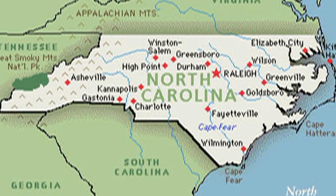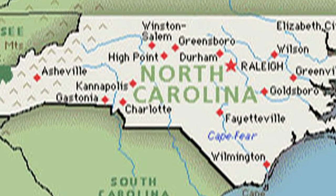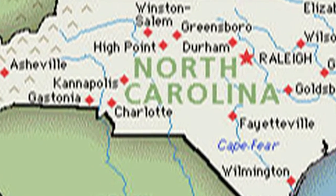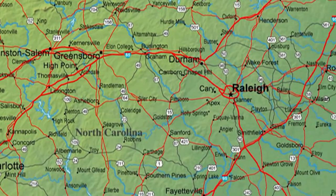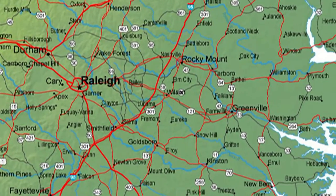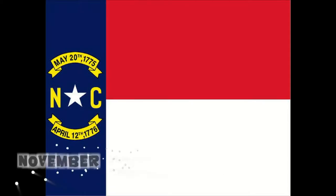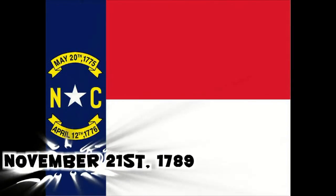North Carolina was founded in 1653 by Virginia colonists. Their major city was Raleigh. The colony was named for Charles I of England. It became a state on November 21, 1789.